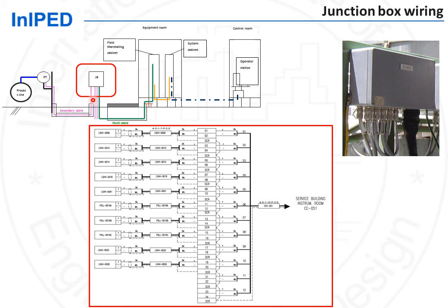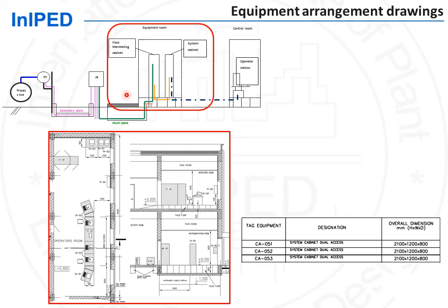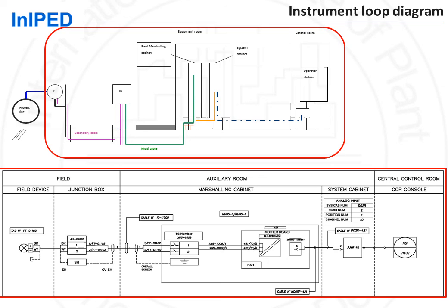The junction box wiring diagram shows the connections between secondary and multi cables. The equipment arrangement drawing shows the layout of the instrumentation equipment room and the position of the various cabinets. Finally, the instrument loop diagram shows the complete connections for one particular instrument, including numbering of terminals, cables, I/O cards, and so on. This drawing is used for pre-commissioning to test the functionality of the instrument and during troubleshooting.